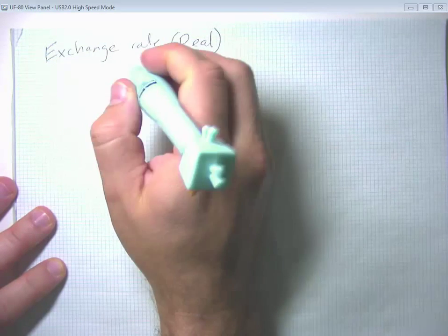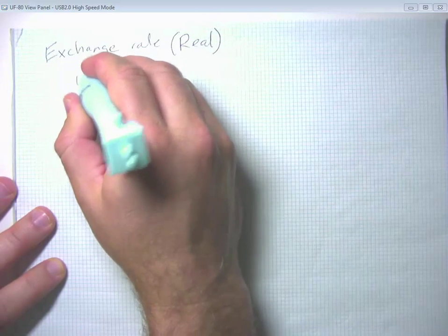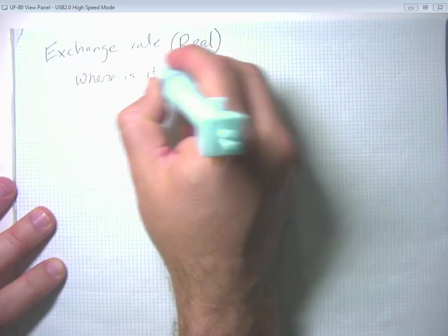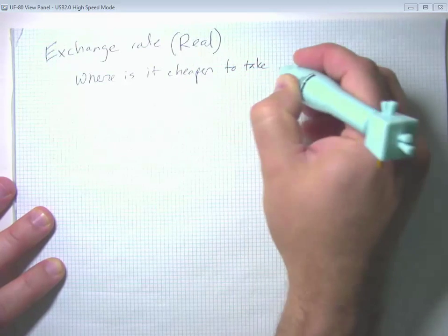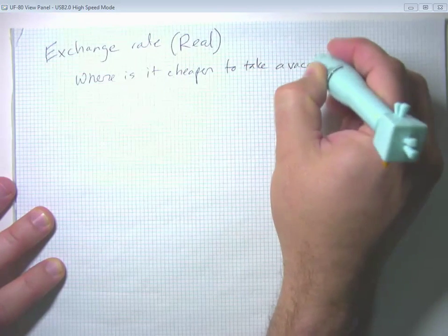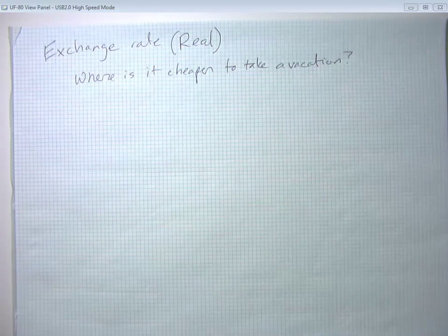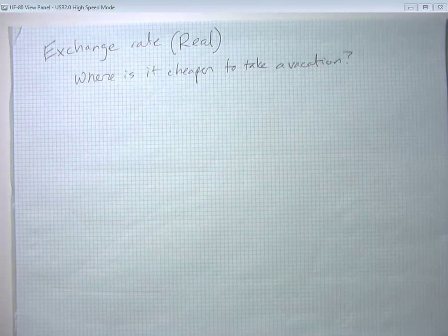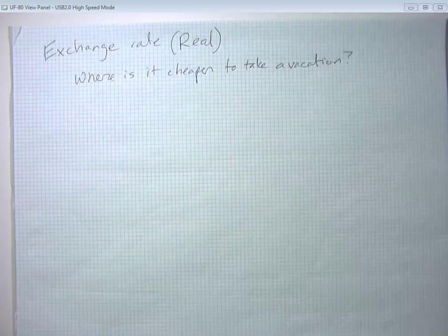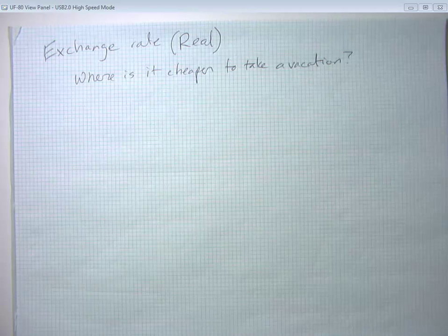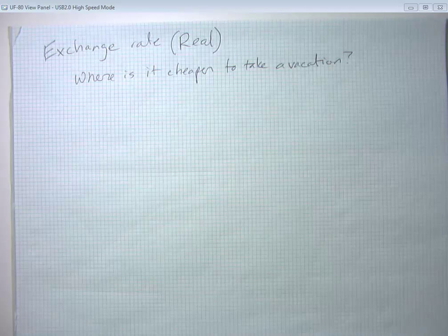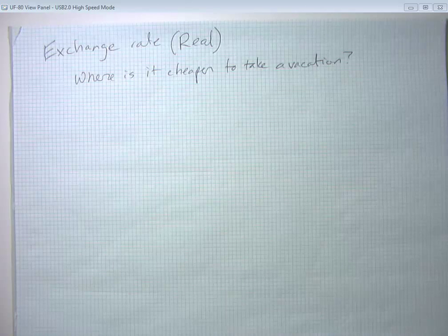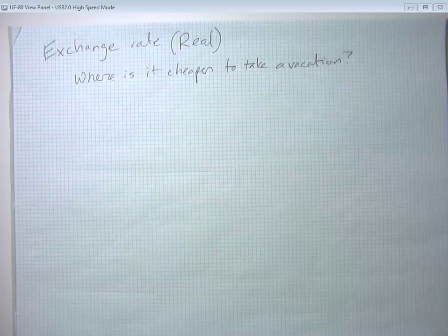So the real exchange rate attempts to get at the following sort of question. Where is it cheaper to take a vacation? We know that prices in Japan are charged in yen, and prices in the US are charged in dollars, and prices in Mexico are charged in pesos. And if we want to compare prices, we need to do a sort of double comparison. We need to convert everything into a common currency, and then compare numbers.